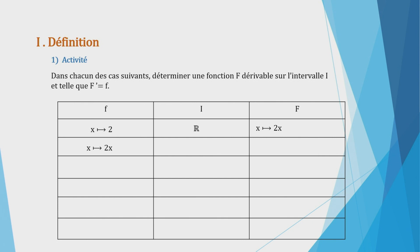Deuxième exemple : soit la fonction définie par f(x) = 2x. Il s'agit d'une fonction linéaire, donc définie sur tout ℝ. La fonction grand F qui à tout x associe x² + 5 est une fonction polynôme, donc dérivable sur tout ℝ, et sa dérivée égale 2x. La fonction petit f qui à tout x associe x³ + x est une fonction polynôme, donc définie sur tout ℝ. La fonction grand F qui à tout x associe ¼x⁴ + ½x² + a est une fonction polynôme, donc dérivable sur tout ℝ, et sa dérivée égale petit f.